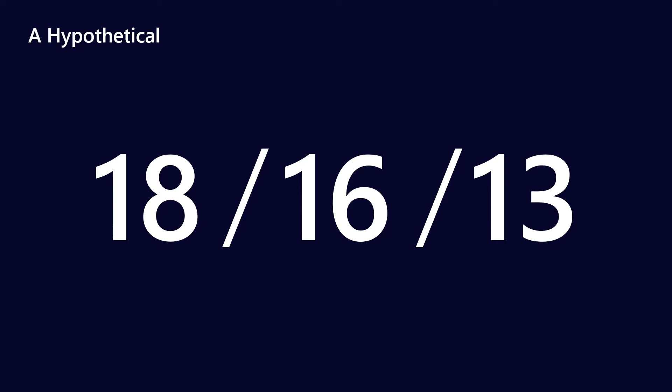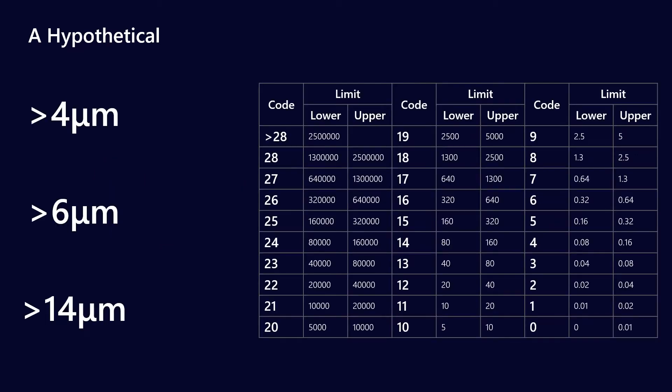So 18, 16, 13. As an ISO cleanliness code, this isn't actually that bad. This is relatively clean for a lot of the sites that I go to, so don't think I'm taking the worst scenario here. But in 18, 16, 13, on the ISO cleanliness scale, would be above 4 microns, anywhere between 1,300 and 2,500 particles per milliliter sample. On the 6 micron, it's anywhere between 320 and 640, and for the 14 micron, it's between 40 and 80.